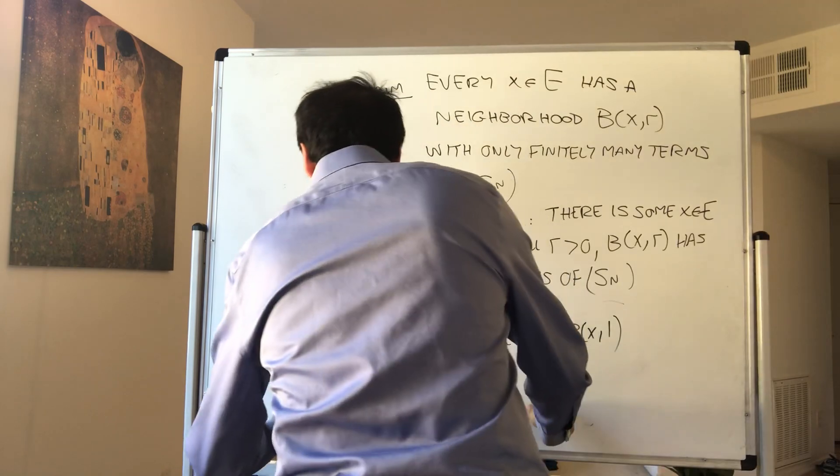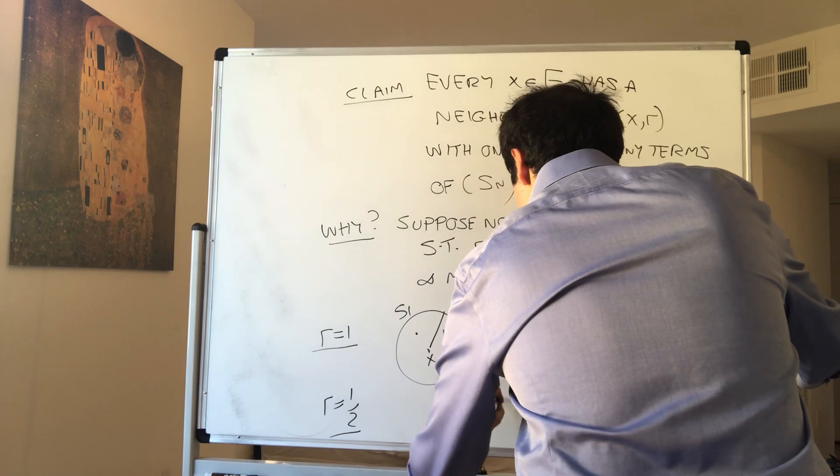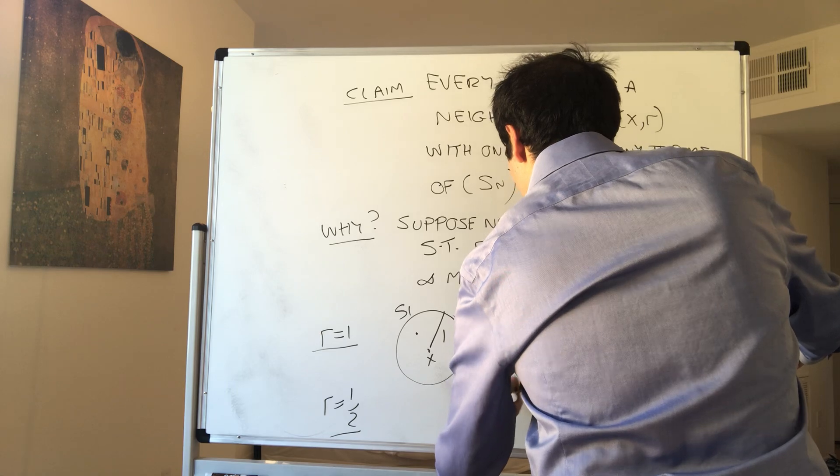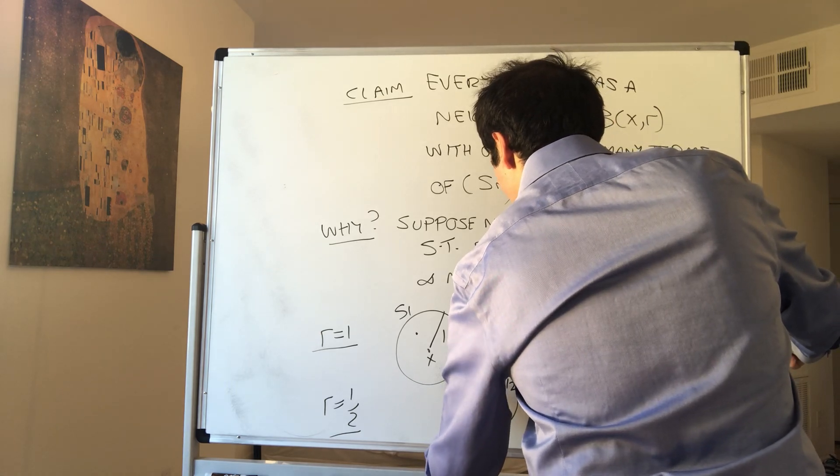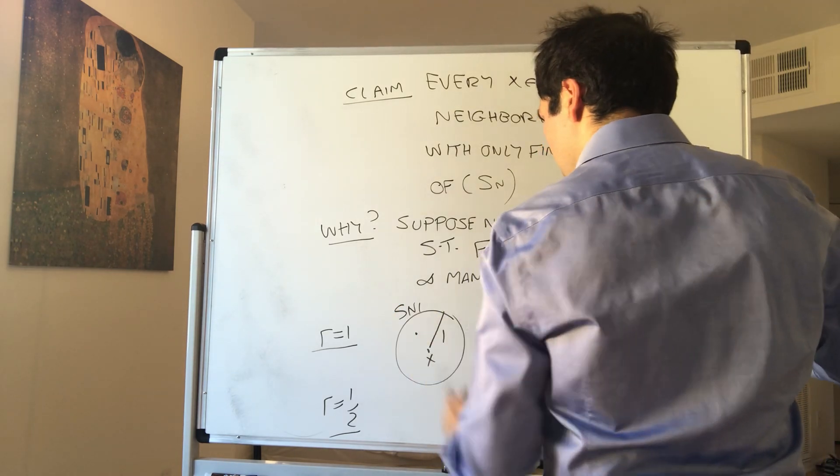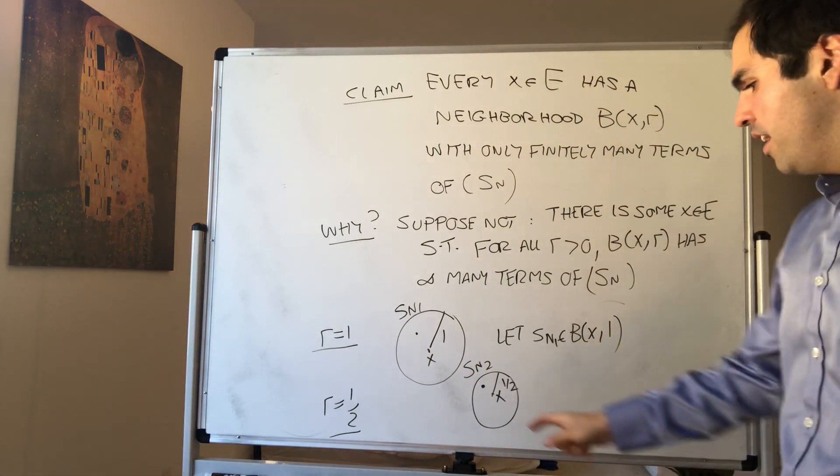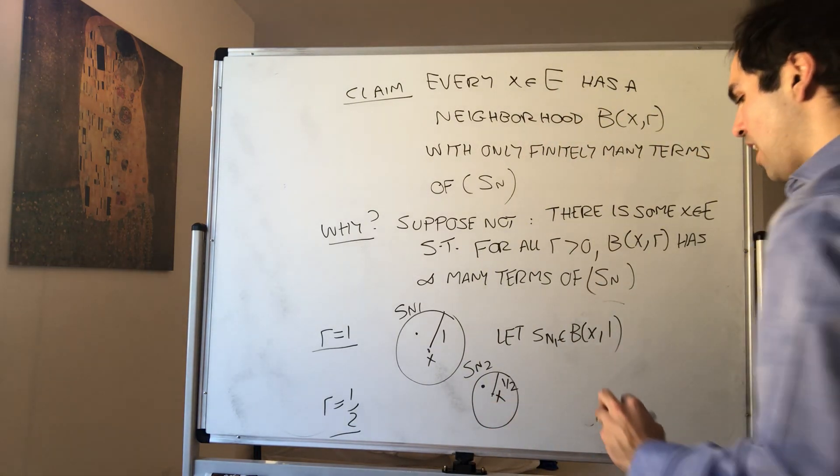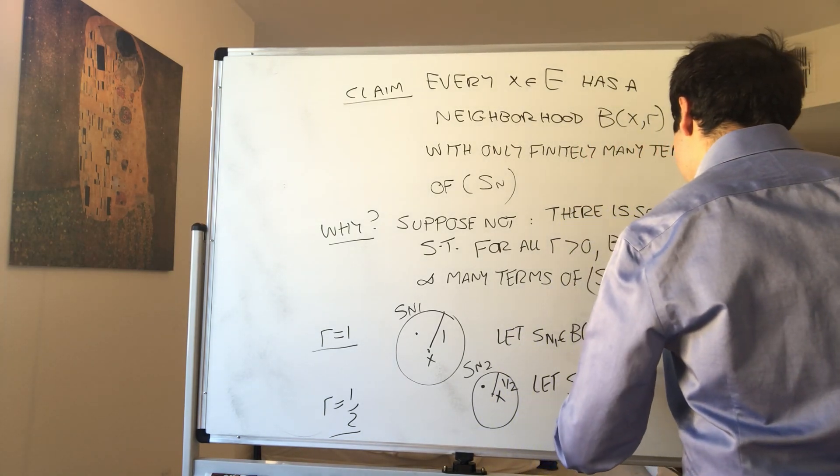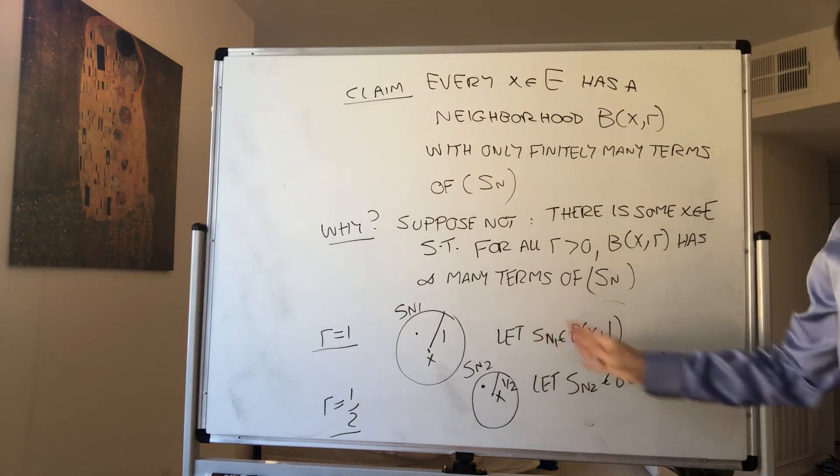Then for R equals 1/2, well this ball, so this is X and this is 1/2, well, let Sn1 be in B(X,1), and then let Sn2 be in B(X,1/2), but that is after Sn1.